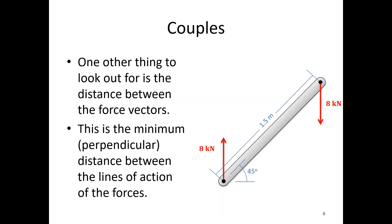So we want to look out for when these forces are not lining up with the beam. It's not going to be this 1.5 meters, it's going to be the perpendicular distance between the lines of action. So draw in your lines of action, pay attention to that, and find the minimum distance between these two parallel lines, which is going to be perpendicular to either of the two lines of action.